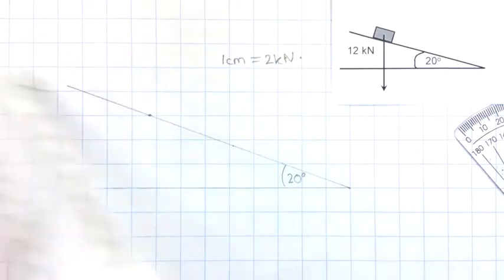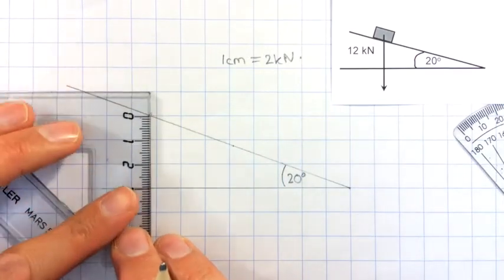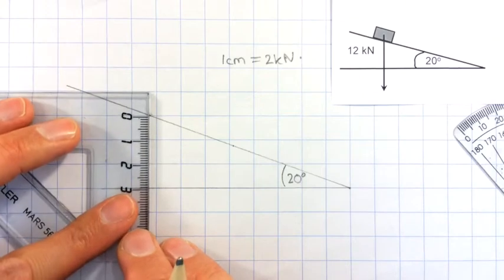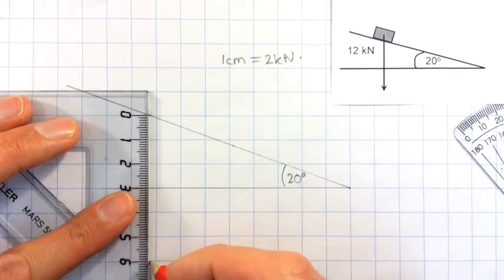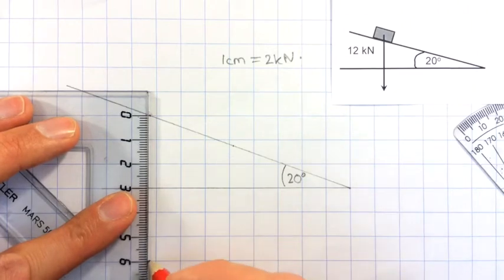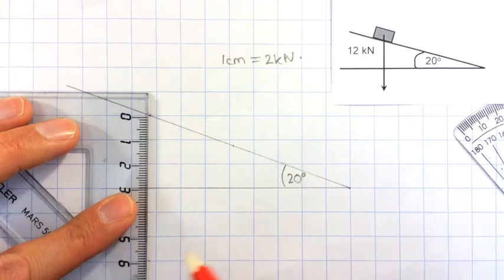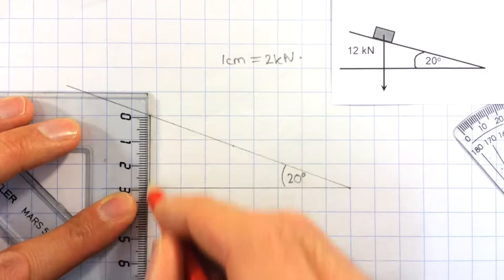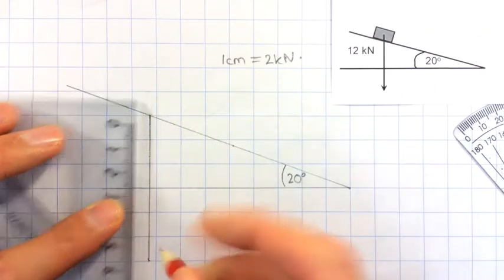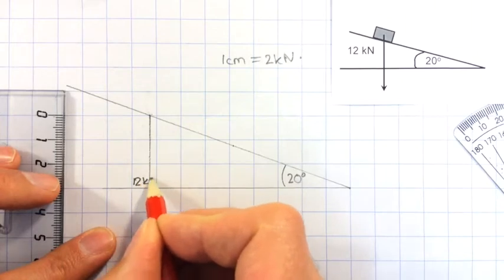What I now need to do is measure 6 cm going vertically down from this spot that I've chosen, which is actually very easy because it's just going to be to this square here. A set square, very useful for doing this. I can mark that in and that is my 12 kN.